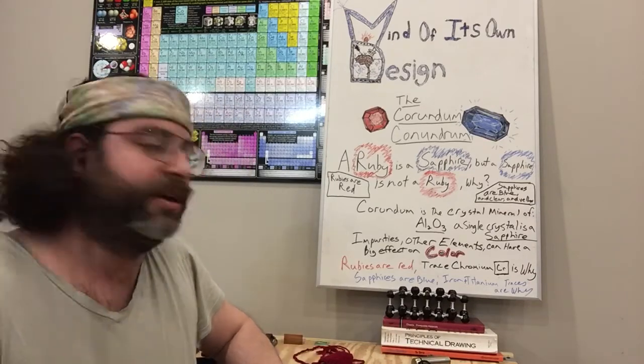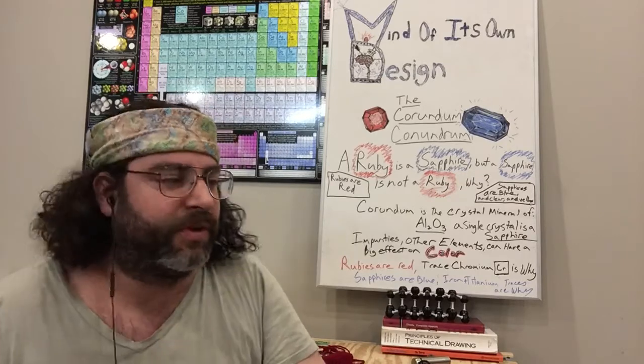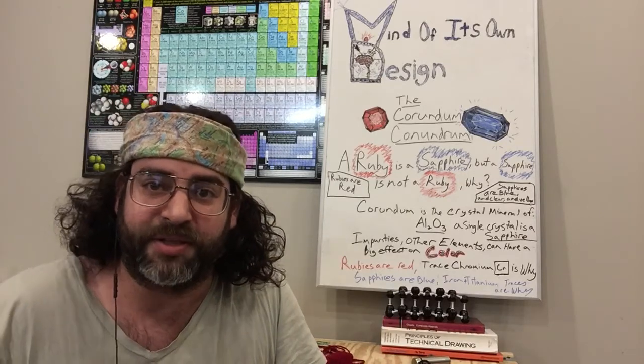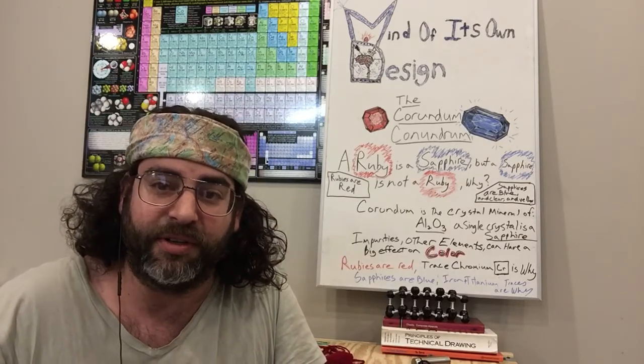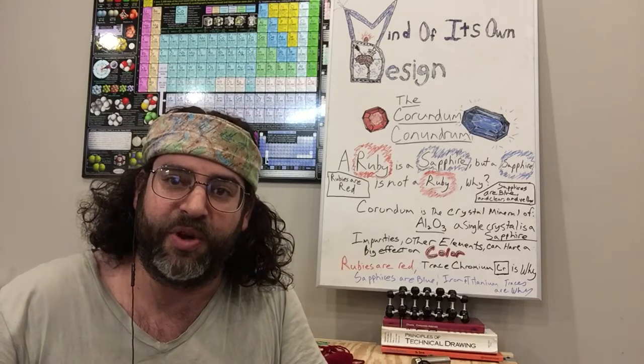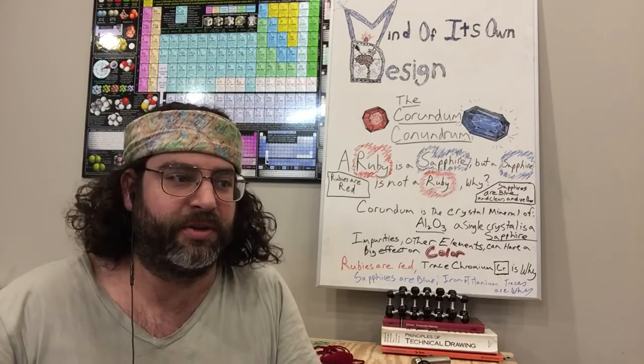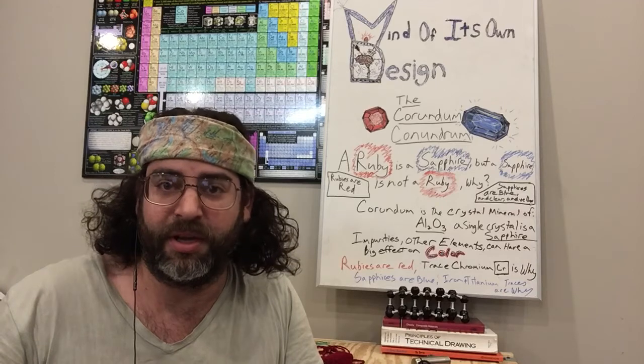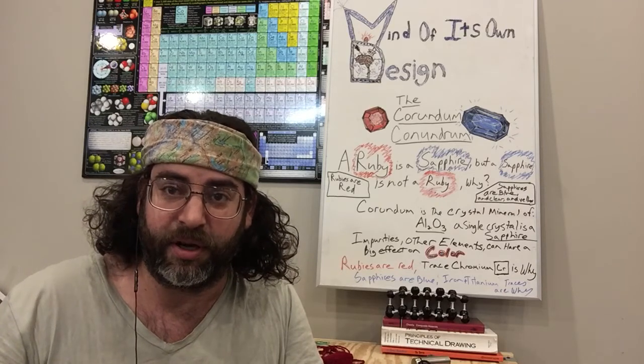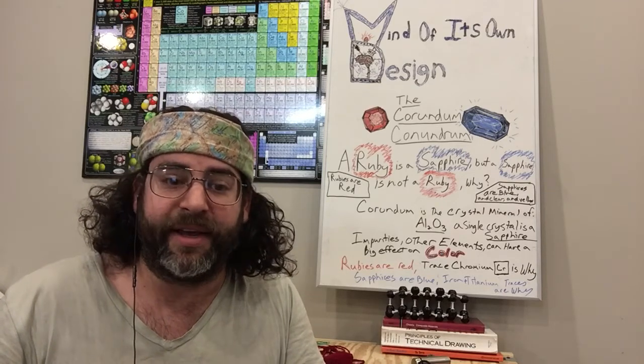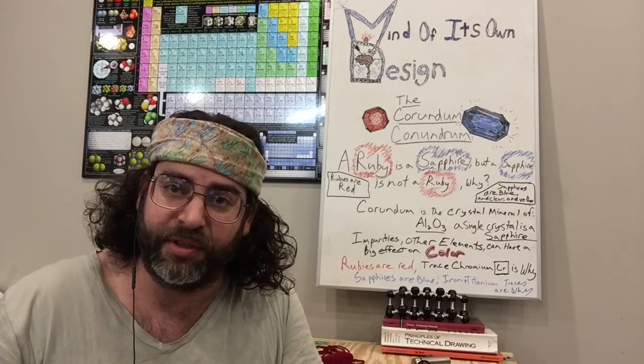So in conclusion, I guess... oh, of course, corundum, I should have said at the beginning, is the mineral that when you mine from the earth, you can get this mineral, corundum. That's another name for aluminum oxide.